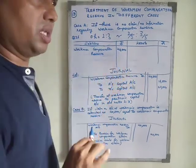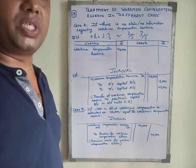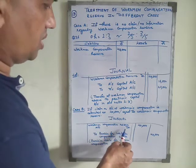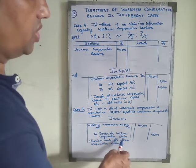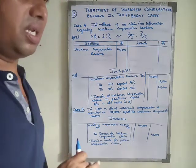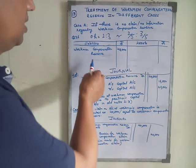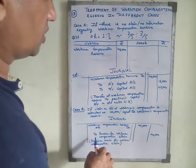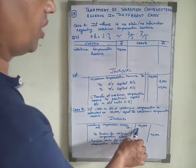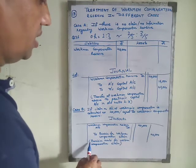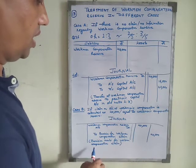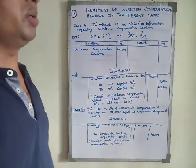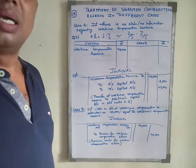When the claim equals the reserve, the treatment is to transfer the workman compensation reserve to a provision for workman compensation claim: 40,000 debited and 40,000 credited. There is no other treatment when the reserve and the claim are equal. The narration is: Provision made for workman compensation claim. These two cases are solved in this video; the other two cases will be solved in the next video.